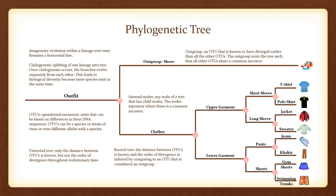This is what is occurring in our tree as you can see from the diverging patterns. Now, OTUs are operational taxonomic units that can be based on differences in their DNA sequences. OTUs can be a species, a strain of virus, or even different alleles within a species. In our tree, they are the clothing items and shoes.